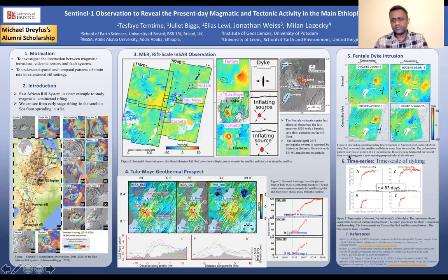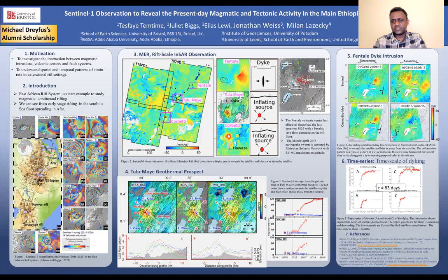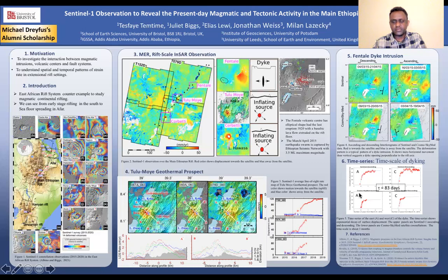We conclude it appears to be a dyke intrusion. We modeled this and found a dyke intrusion about six kilometers long and extending from two to six kilometers depth — sorry, four to six kilometers depth. Looking at the time series, we calculate the time scale of deformation for this dyke intrusion. The time scale shows an exponential decay with a time constant of about 83 days, which is two orders of magnitude longer than that of the Afar dyke intrusion or some other active magmatic centers such as those in Iceland.